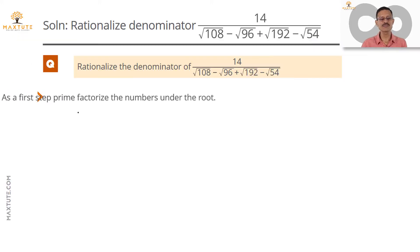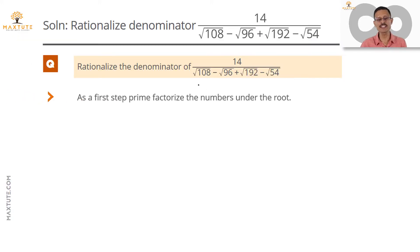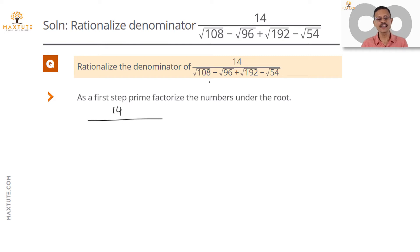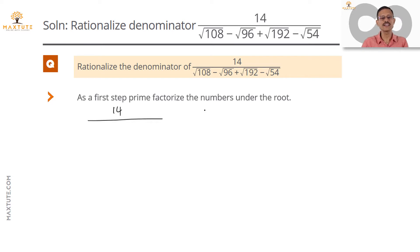Let's find the prime factors for each of these numbers. 14 divided by 108 — if you prime factorize 108, it is 54 into 2, which is 27 into 2 squared. Therefore, it is 3 cubed into 2 squared.